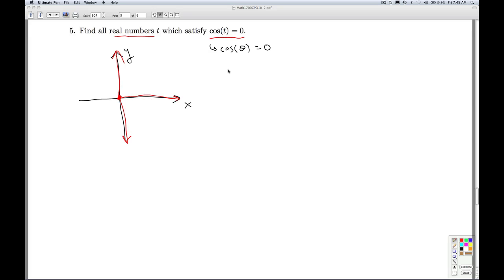So it's a quadrantal angle, so t could be π/2, or it could correspond to any angle coterminal with π/2, which would be π/2 + 2πk, where k is zero, plus or minus 1, plus or minus 2, et cetera.